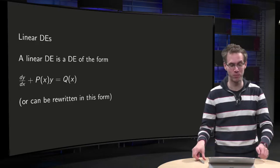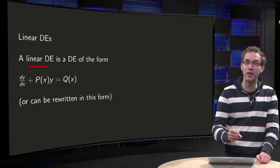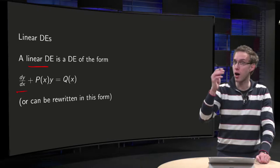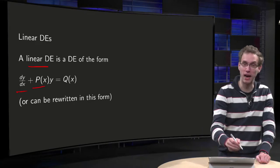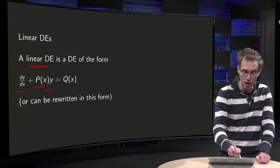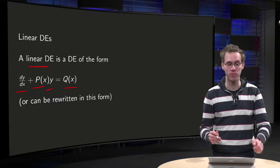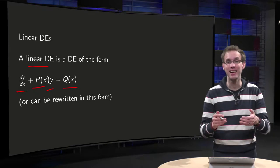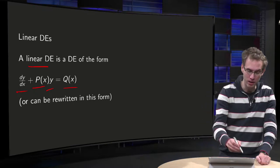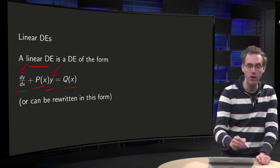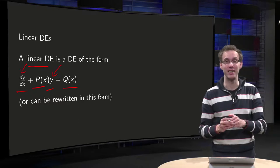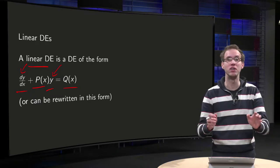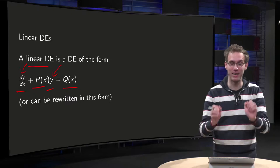A linear differential equation is a differential equation of the form y' plus some arbitrary function of x, p(x), times y equals some arbitrary function q(x). Or you can rewrite it in this form. What is linear in the linear differential equation? The y and y' are linear. x may be anything, p(x) and q(x) may be any functions, but y and y' have to be linear in the equation.